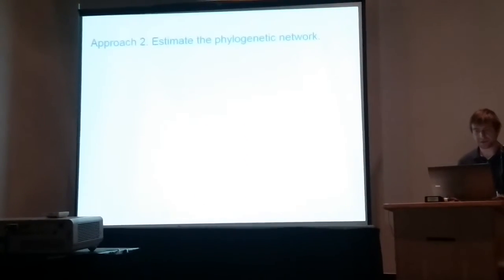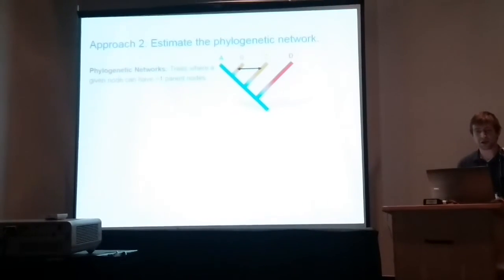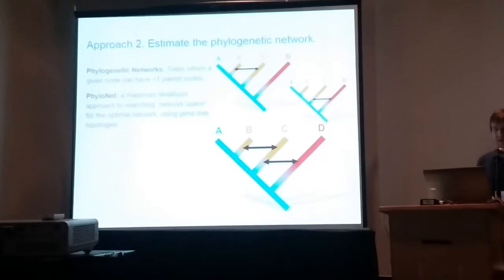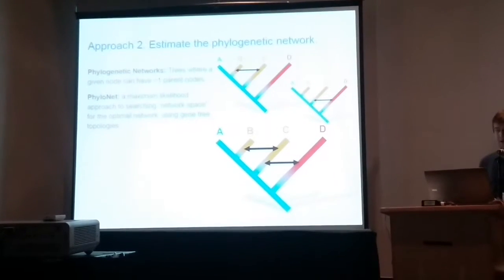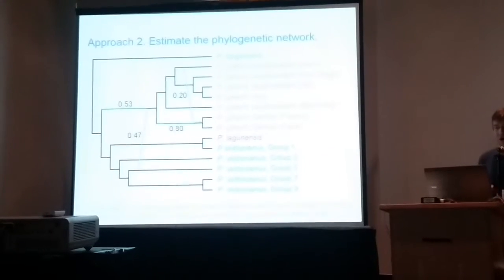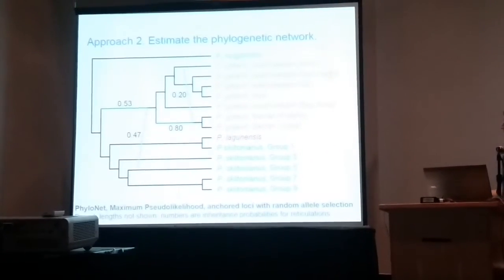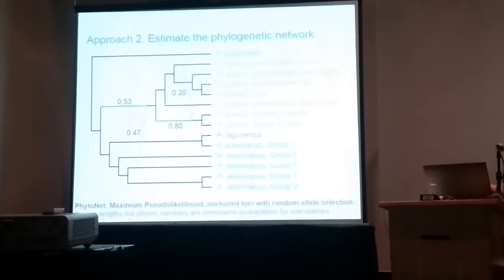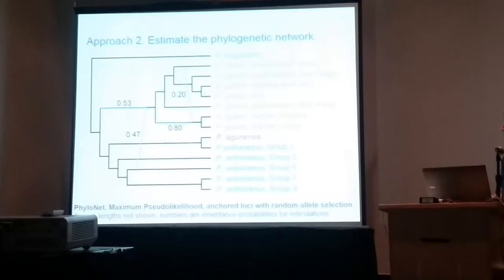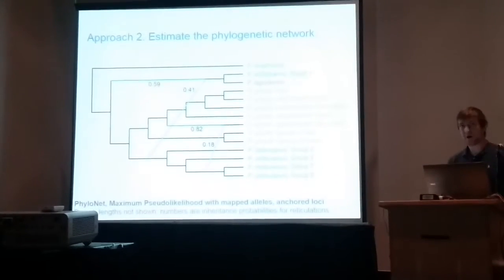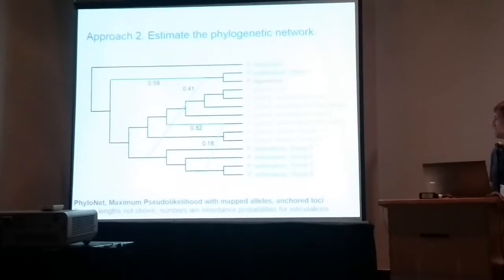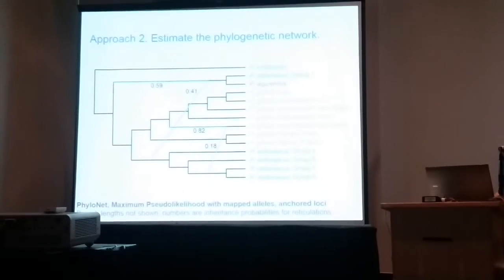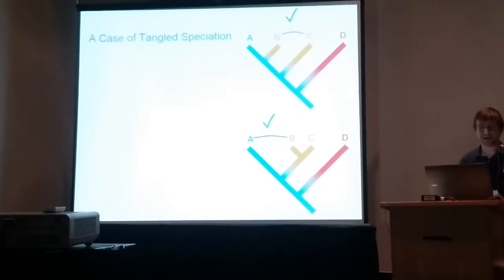I want to briefly talk about my second approach using phylogenetic networks. Phylogenetic networks are trees where a given node can have greater than one parent node — basically, you can estimate introgression events. I used PhyloNet for this, which is a maximum likelihood approach to estimating networks. I got two networks: one using randomly sampled individuals, where I see a monophyletic gilberti with evidence of introgression into a skiltonianus group. I also see this when I give PhyloNet all my alleles mapped to specific individuals — again, introgression between a monophyletic skiltonianus clade and a monophyletic gilberti clade.